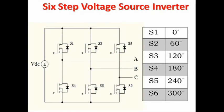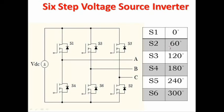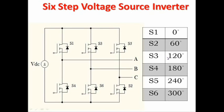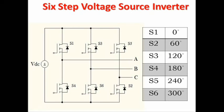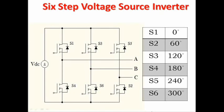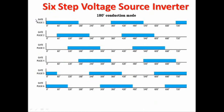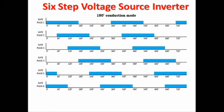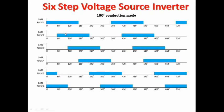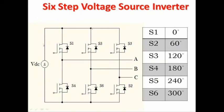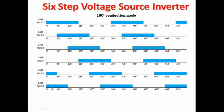The table represents the firing angles for all 6 switches. S1 is switched on at 0°, S2 at 60°, S3 at 120°, S4 at 180°, S5 at 240°, and S6 at 300°. Please verify the firing angles in the gate pulse diagram. Gate pulse 1 has a firing angle of 0°, meaning MOSFET 1 starts conducting from 0° itself. Gate pulse 2 arrives at 60°, S3 at 120°, S4 at 180°, S5 at 240°, and S6 at 300°.